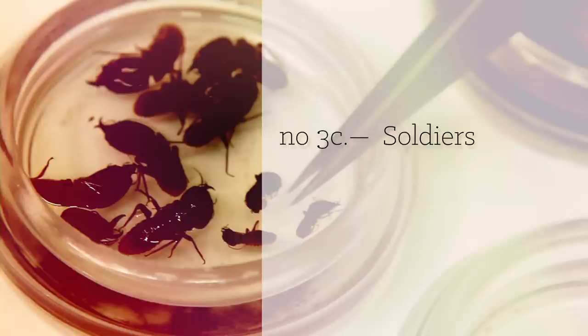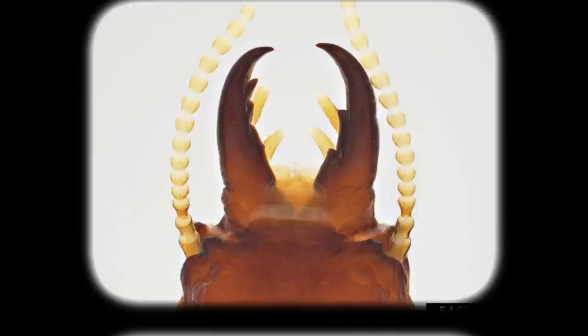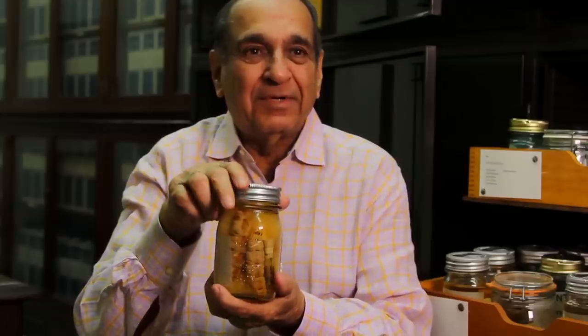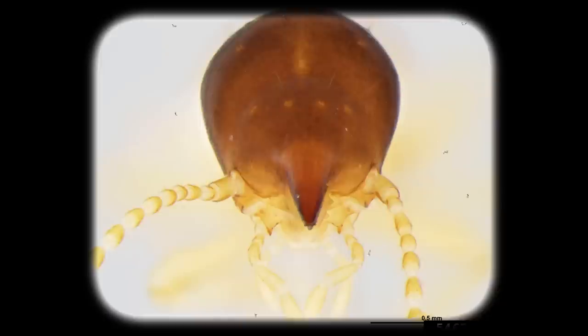The soldiers are so morphologically constructed that they can defend the colony. They have long, biting mandibles. The enemies are ants, and they can chop off the ants' body or head. Some of them have developed snouts, or a squirt gun apparatus, where they can squirt a sticky liquid and gum up the enemy.